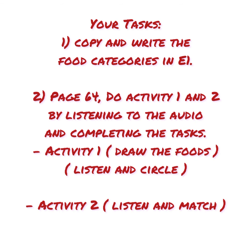Your tasks for today: First, copy and write the five food categories — grains, vegetables, milk, fruit, meat and beans — dalam buku English 1. Number two, siapa yang ada printer boleh print page 64, then cut and paste gambar untuk Activity 1 dan Activity 2. Dengar dan padankan menggunakan pembaris. Siapa yang tak ada printer, kena salin dan lukis gambar makanan tu elok-elok dan salin Activity 1 dan 2 dalam English 1. Jangan lupa tulis tarikh. That's all for today — enjoy, bye!